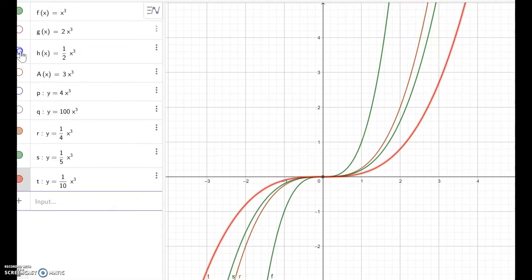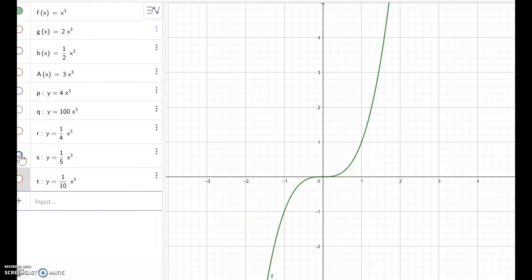So let me show one by one here. This is the x cube. This is 1 over 10 cube. Now this is 1 over 5th cube. 1 over 4th cube. Now 1 over 2 cube. So like this.